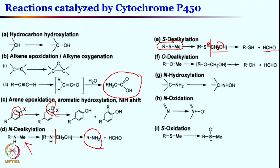Similar to S-dealkylation and N-dealkylation, O-dealkylation can also occur. For example, if you have anisole you can get phenol; if you have thioanisole you can get thiophenol and formaldehyde. For anisole, the methyl unit undergoes sp3 C-H hydroxylation chemistry via radical C-H abstraction, giving a carbinol ether intermediate and overall releasing formaldehyde and R-OH.